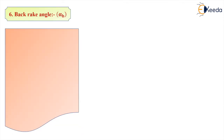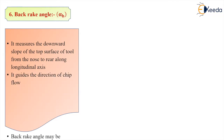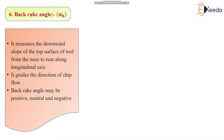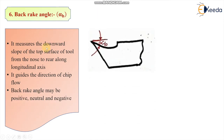Let us start with the first rake angle — the back rake angle. The back rake angle is the downward slope of the top surface of the tool from the nose to the rear along the longitudinal axis. This angle guides the direction of chip flow.